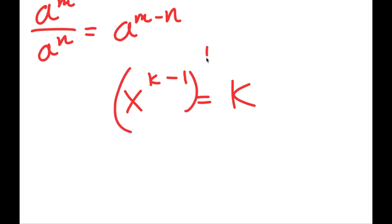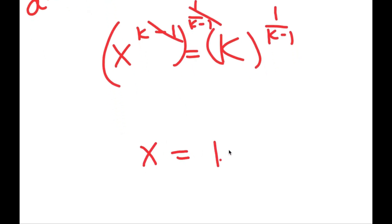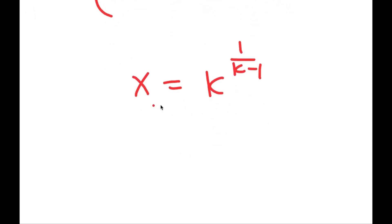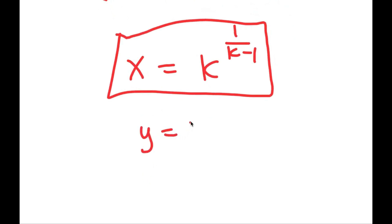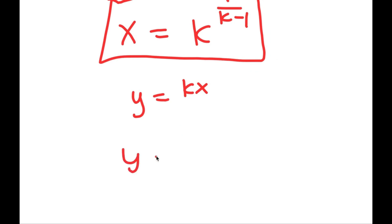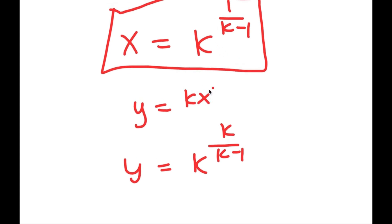Taking both sides to the power of 1/(k−1), the exponents cancel and I get x = k^(1/(k−1)). Since y = kx, substituting gives y = k · k^(1/(k−1)) = k^(k/(k−1)).